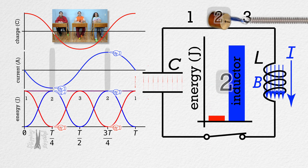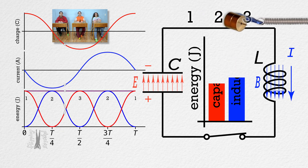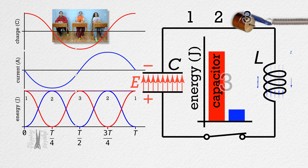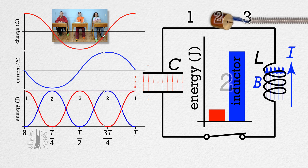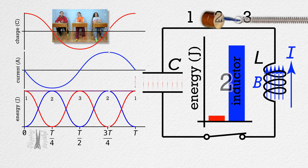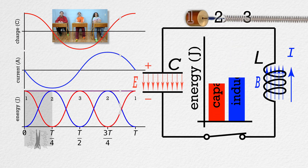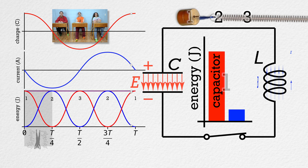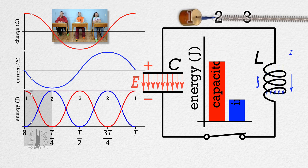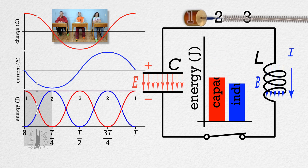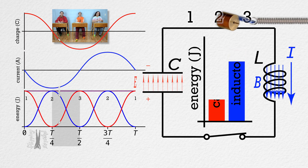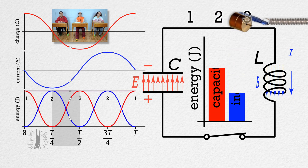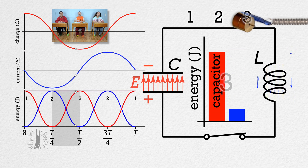This LC circuit really is in simple harmonic motion just like a horizontal mass-spring system. We should also talk about the period. From position one to position two is one-fourth of a full cycle, so the time it takes is one-fourth of the period. And that is true between every position — it takes one-fourth of the period between every position.